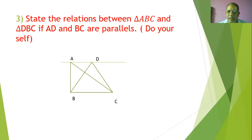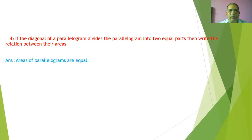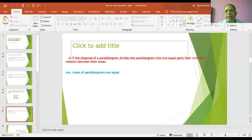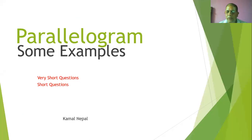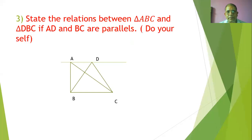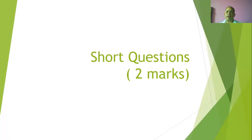You should write down your answer yourself — it is a really simple version. Number four: if the diagonal of a parallelogram divides the parallelogram into two equal parts, write the relation of their areas. The diagonal divides it into two parts, and their areas are equal. So the answer is: their areas are equal.